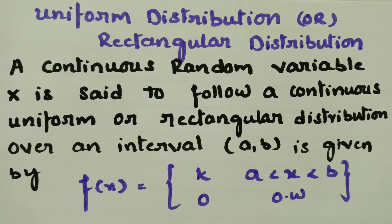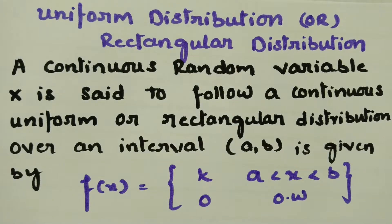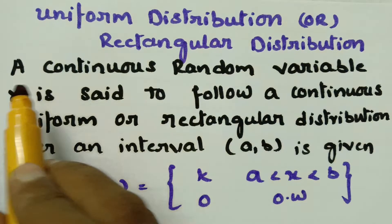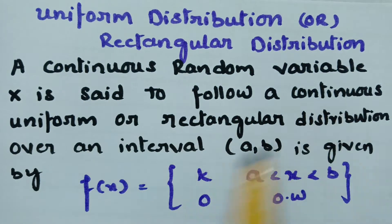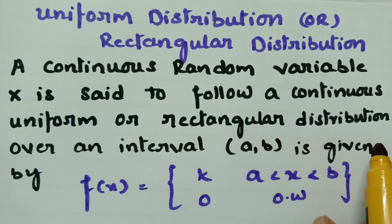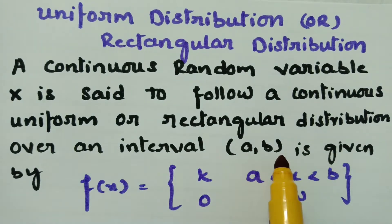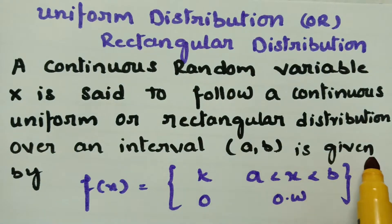This video is on uniform distribution, also called rectangular distribution. I am going to discuss the definition of it, and also find the mean and variance of the uniform distribution. According to the definition, a continuous random variable x is said to follow continuous uniform or rectangular distribution over an interval (a, b).